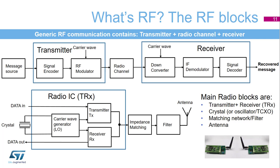We can shortly describe the radio integrated circuit as the STM32WB is. It contains both main parts, the transmitter and the receiver. It also embeds a frequency synthesizer. It needs a reference oscillator, which could be covered by a crystal.